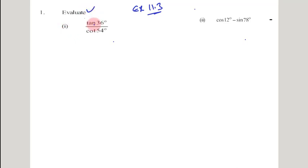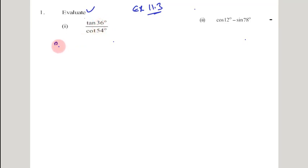Evaluate the value of tan 36 degrees divided by cot 54 degrees. If you observe the numerical values of these angles involved in our question — 36 and 54 — and if you add them, you get 90 degrees. That means the sum of these two angles is 90 degrees.